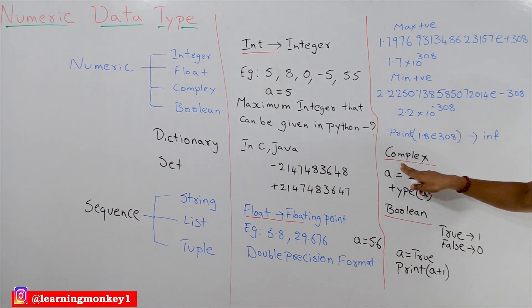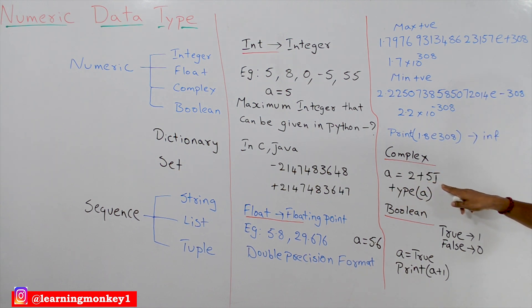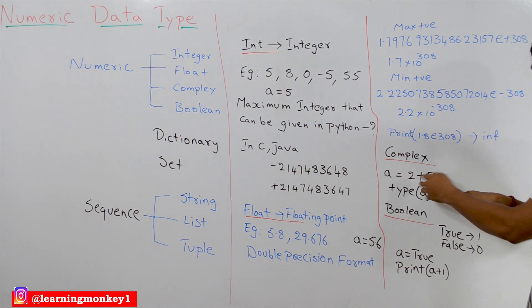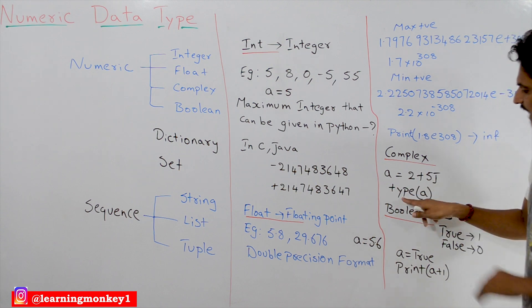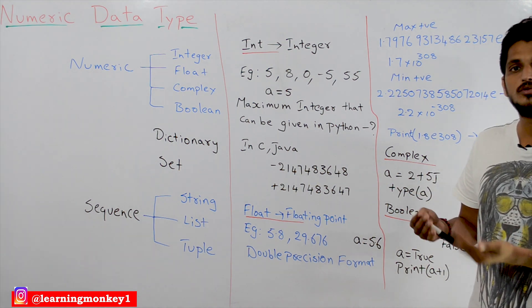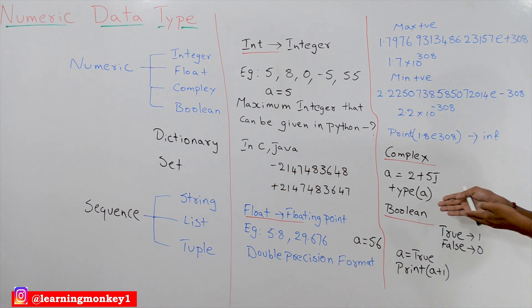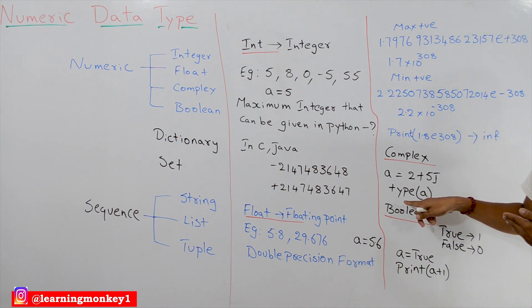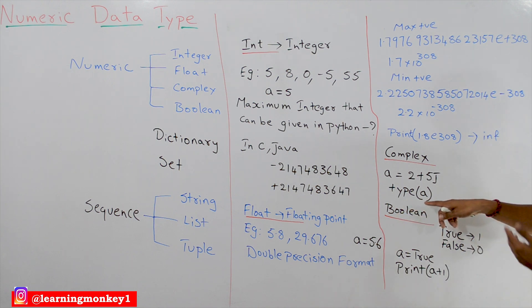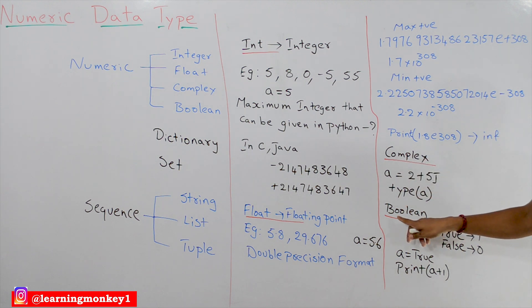The next data type is complex. A is equal to 2+5j — these are complex number representations. If numbers are given in this format, Python will consider it as complex type. The type() function is used to give the type to which the variable is assigned. So A is assigned to complex, and the output we get is complex. For complex calculations and complex logic, we use the complex data type.